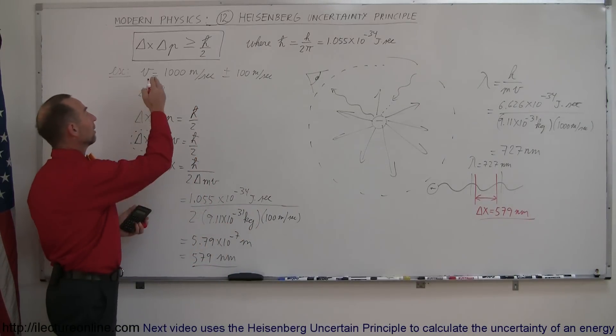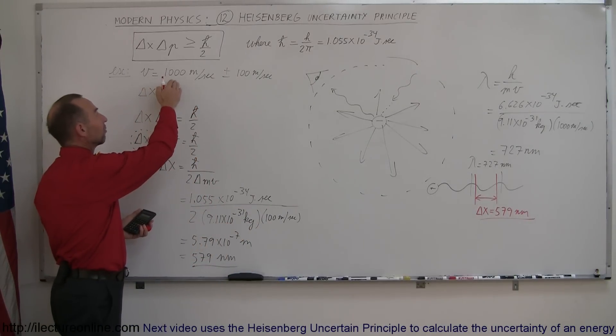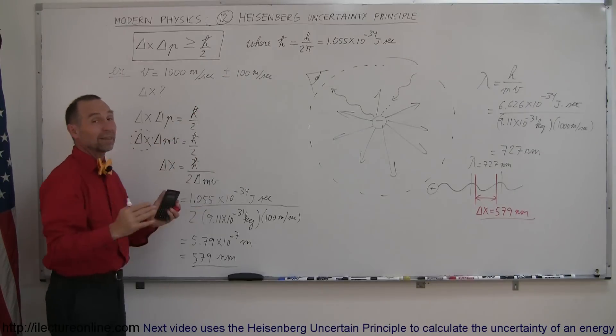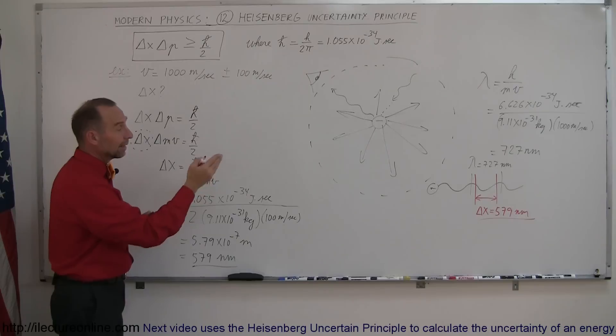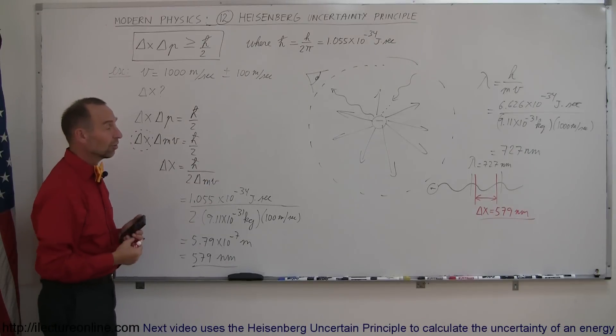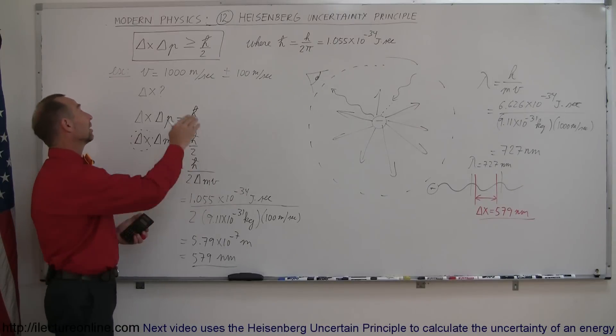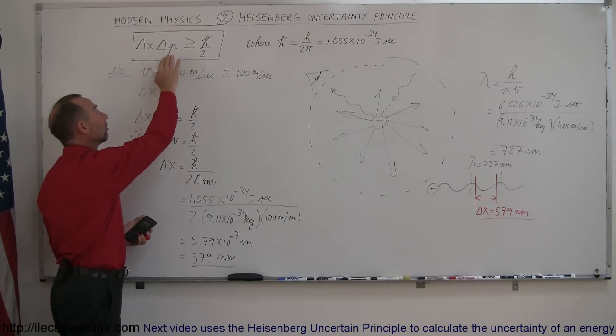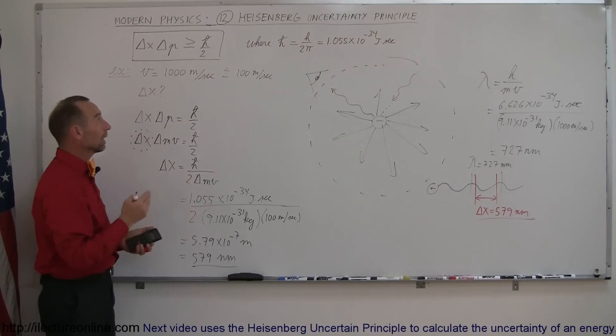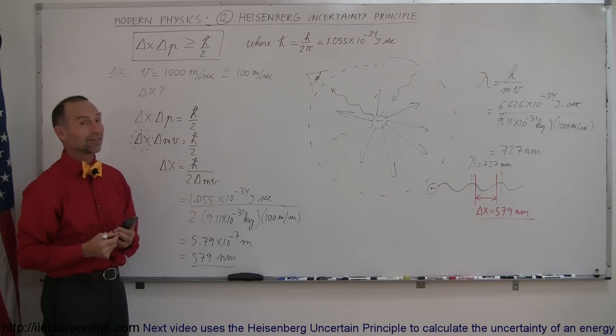So if we know the velocity to be 1,000 meters per second with an uncertainty of about 10% in its velocity, then we'll find the uncertainty in its position almost equal to a full wavelength of its motion. And that's how you deal with the Heisenberg uncertainty principle that deals with position and momentum. There's another principle that deals with energy and time, but that will have to be our next example. If you're interested in that, stay tuned.